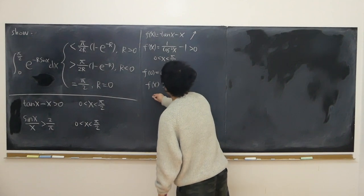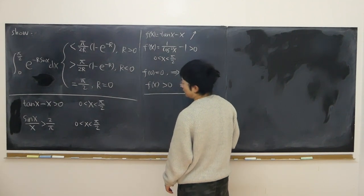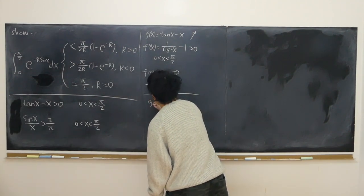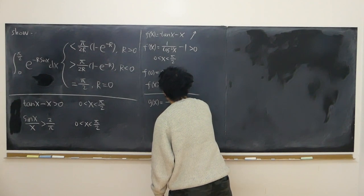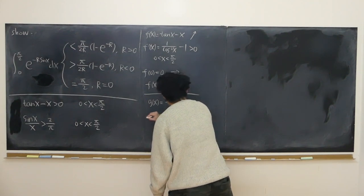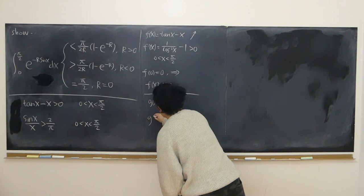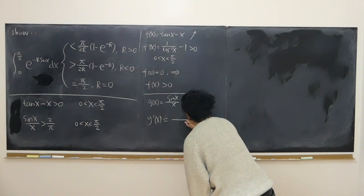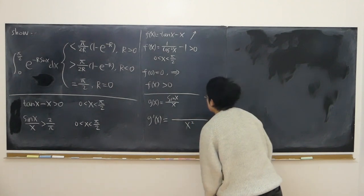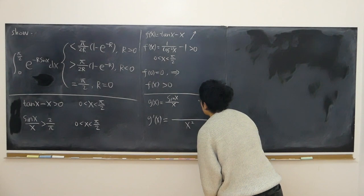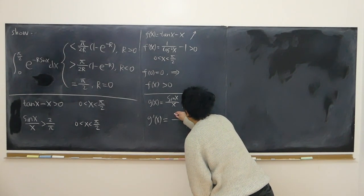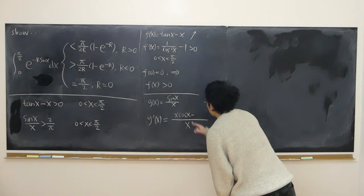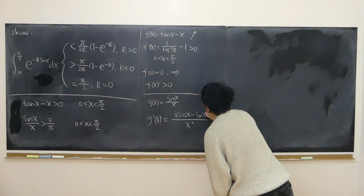Now I'm going to show the second lemma: sine x over x, denoted as g of x. Also look at its derivative. According to the quotient rule formula, we have x squared in the denominator, and in the numerator we have the derivative of sine x which is cosine x, times sine x minus the derivative of x which is 1, times sine x.